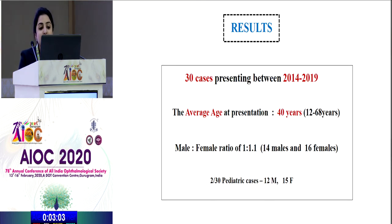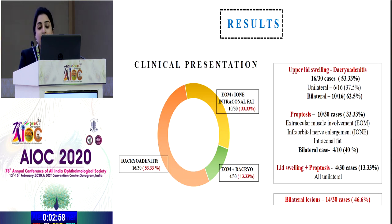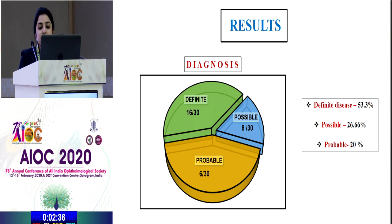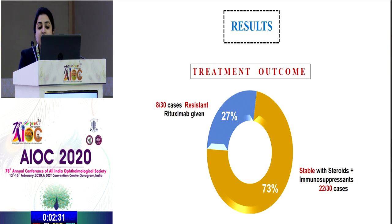Coming to the results: the average age at presentation was 40 years, with a male-to-female ratio of 1-to-1.1. Sixteen out of 30 cases (53%) presented with upper lid swelling due to dacroadenitis. Thirty-three percent had proptosis, and 13% had both lid swelling and proptosis. Bilateral lesions were seen in 46.6% of cases. Systemic involvement was seen in 16% of cases, involving the salivary glands, lymph nodes, and pancreas. Definite disease was 53%, possible 26%, and probable 20%. Seventy-three percent had stable outcomes with steroids and immunosuppressants, while 27% required rituximab due to steroid resistance.